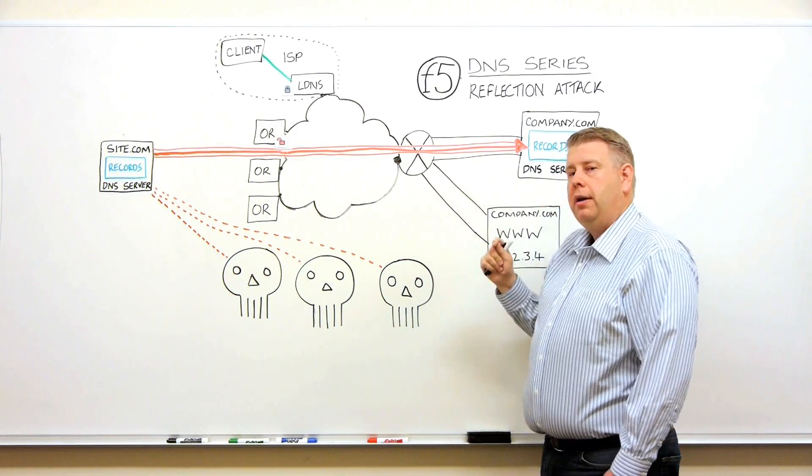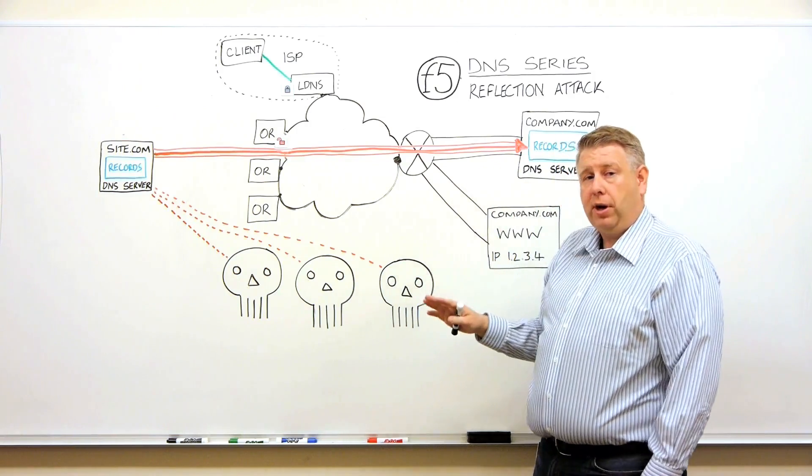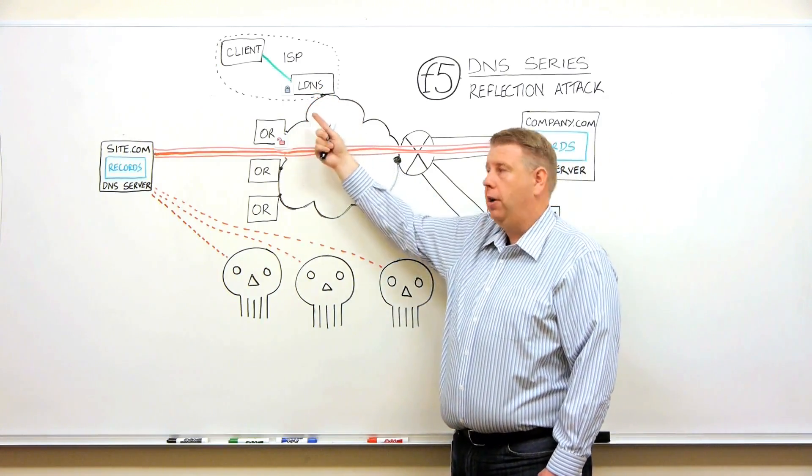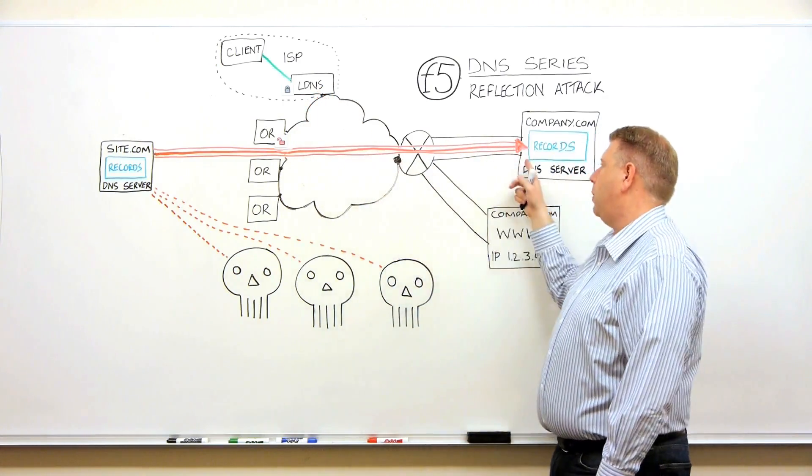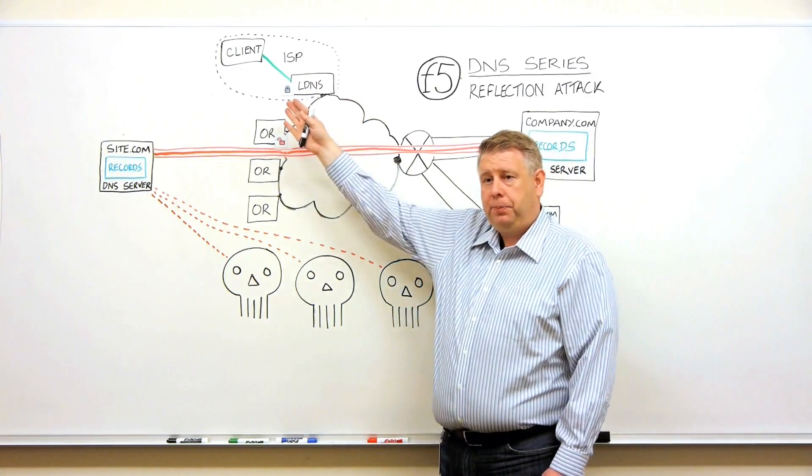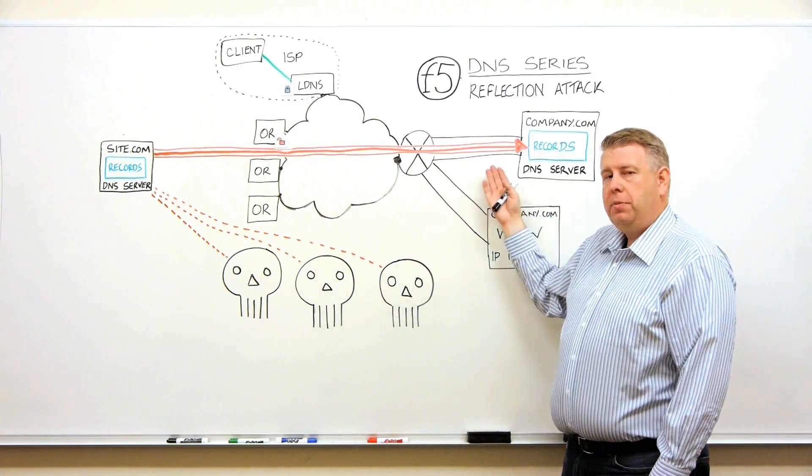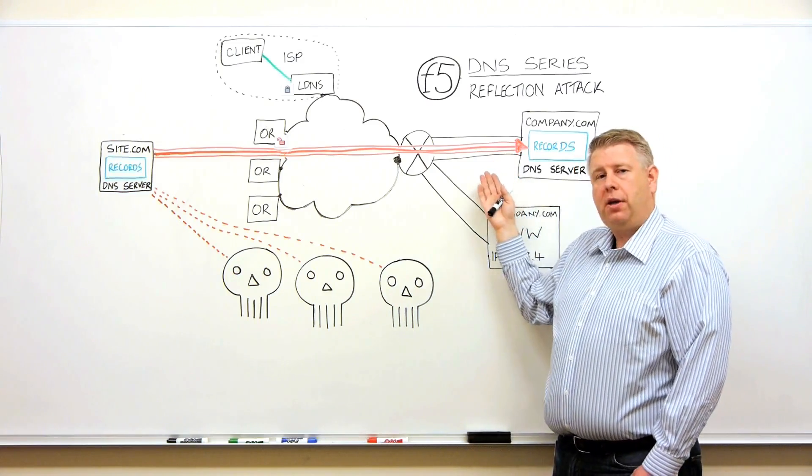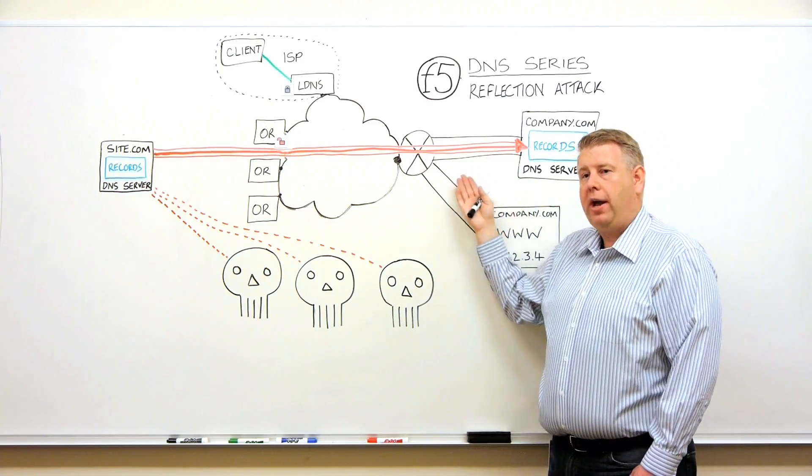In the DNS normal operation section, we talked about how a local DNS server is a resolver. It asks for a response. It's expecting a response. When a server gets too many responses it never asked for, usually it has to spend a lot of time processing and trying to figure out why it got a package.